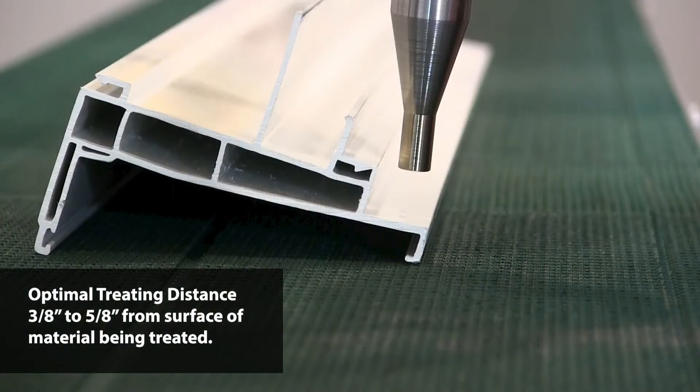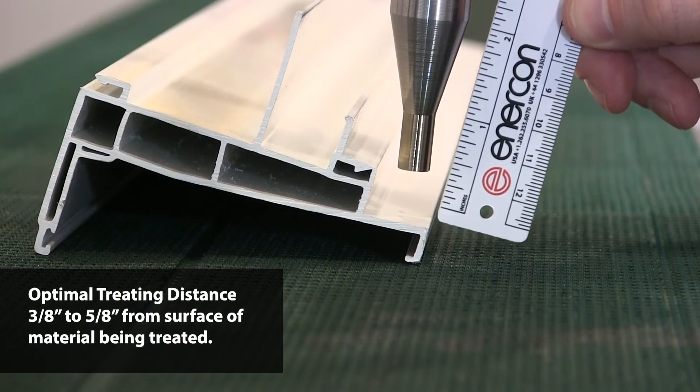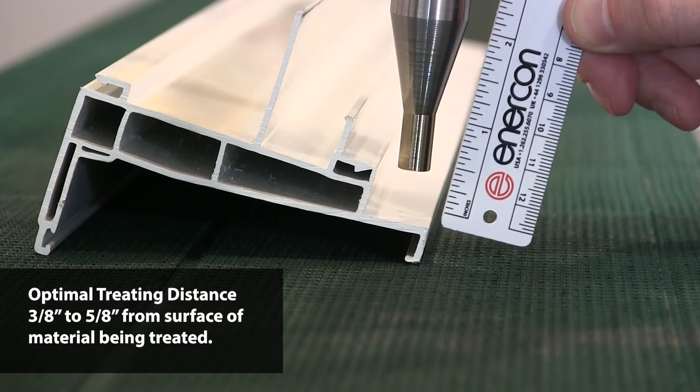For optimal treating results, when setting up your blown ion discharge head, set it 3 eighths to 5 eighths of an inch from the surface to be treated.